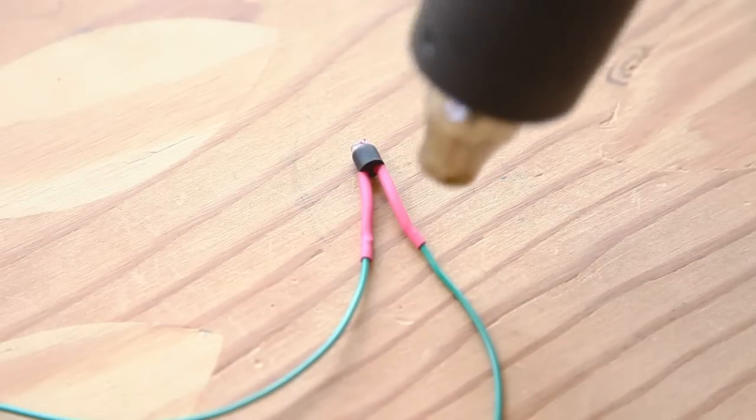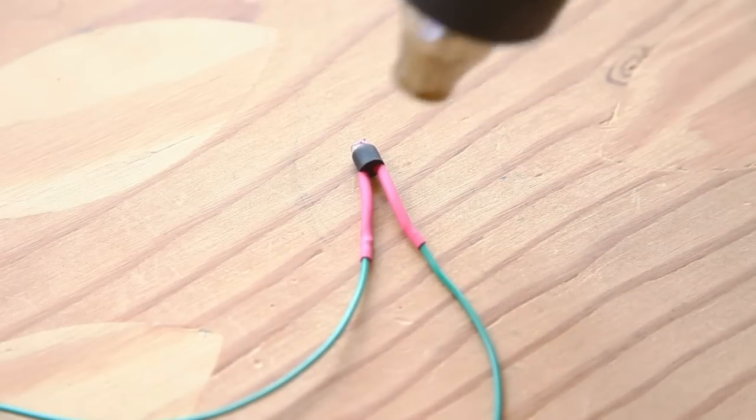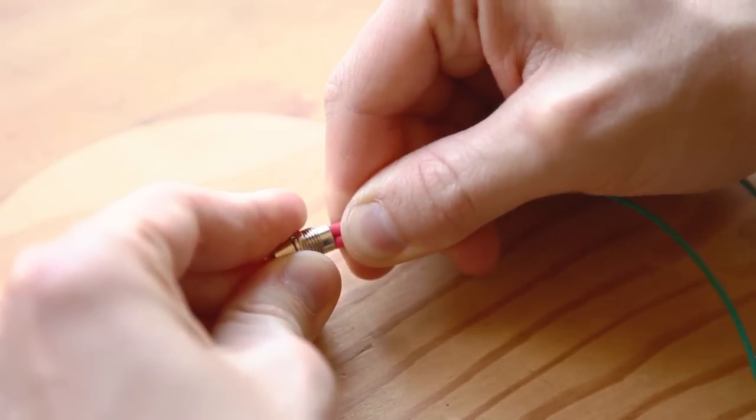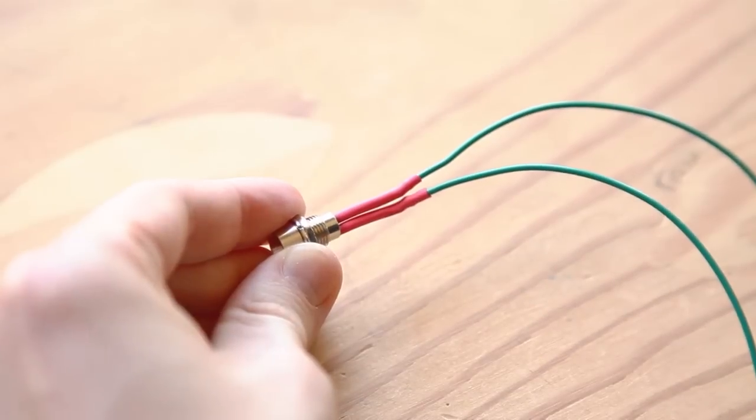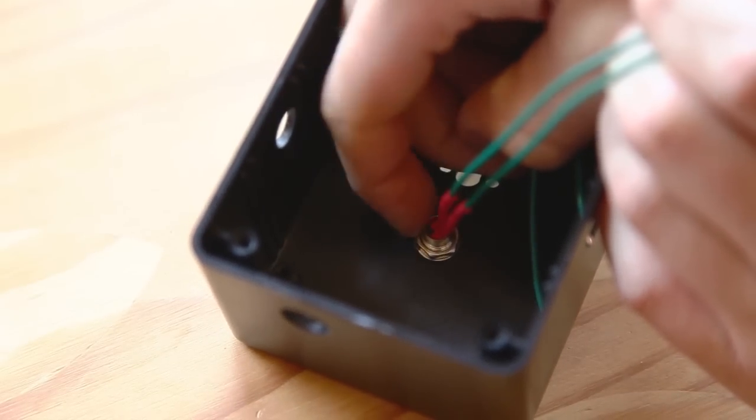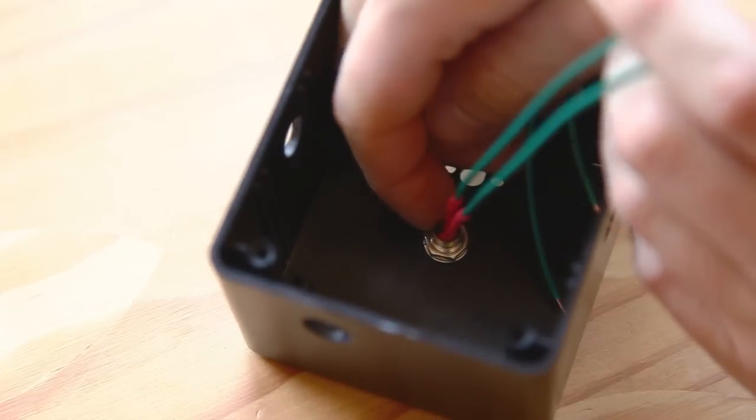Then, cover all the joints and exposed leads with heat shrink tubing. Push the insert back into the LED holder until the photoresistor is seated in the opening. Now, put the LED holder through the enclosure from the front and tighten down the hex nut and split washer from behind.